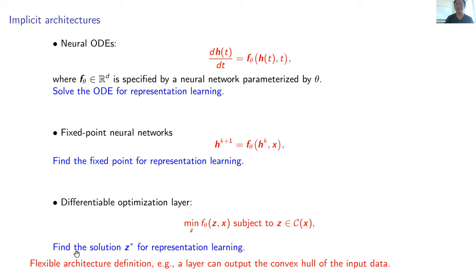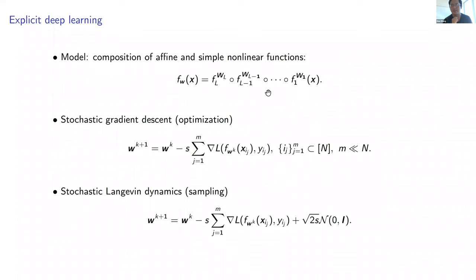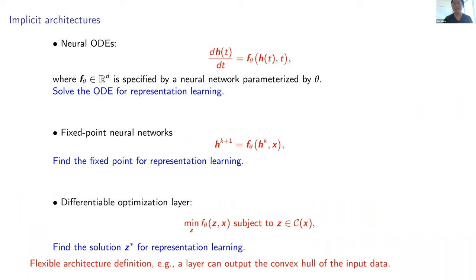These three implicit architectures have drawn a lot of attention because of their nice mathematical and practical properties. For instance, they allow much more flexible neural network design. Suppose I want the neural network output to be a convex hull of the input points — for classical neural networks that seems impossible, but with the differentiable optimization layer that becomes feasible. The reason they're called 'implicit' is that the map is not defined explicitly like a composition of simple functions, but rather defined by solving another equation.